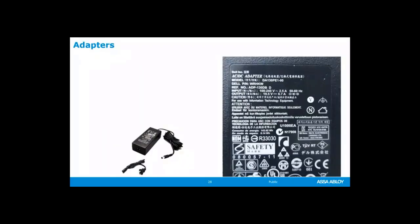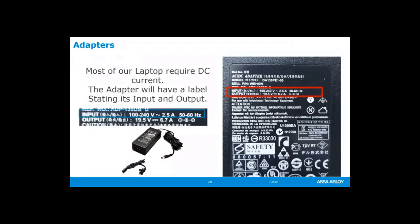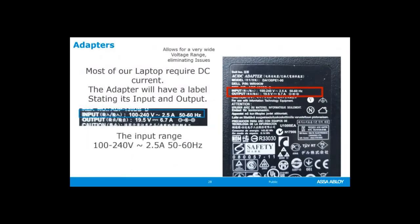Most of our laptops require DC current, and the adapter will have a label stating its input and output. The input range is 110 to 240 volts at approximately 2.5 amps at 50 or 60 hertz. Europe uses 50 hertz, which is 50 cycles per second, while the United States uses 60 hertz, which is 60 cycles per second. So this adapter can work in both the United States and Europe with any voltage range from 100 to 240 volts on either 50 or 60 hertz. The output, which is what's required by the computer, is 19.5 volts DC at 6.7 amps — so it's very precise.